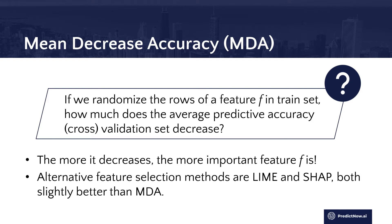What MDA does is that for a particular feature, it will randomize the roles — that is to say, it will randomly map different feature values, different predictor values, to a label. If this feature is unimportant, then who cares if it randomizes? It will have no effect on the predictive accuracy.